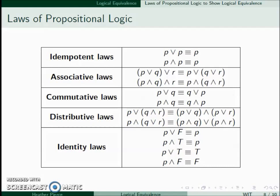The associative laws say that if I'm using either the conjunction or the disjunction, I can move parentheses around as long as it's the same operation throughout the problem. The commutative laws: P ∨ Q is equivalent to Q ∨ P, and P ∧ Q is equivalent to Q ∧ P.